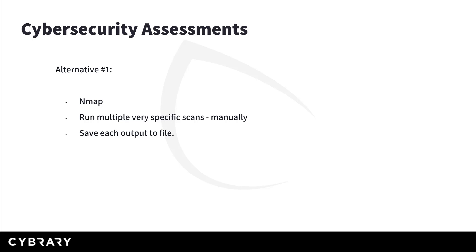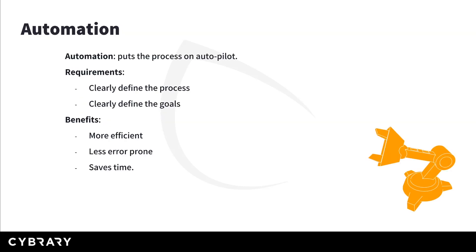So how else could you tackle this problem in a more efficient way? This is where automation makes really good sense. Automation means having the entire process, or at least a very large part of it, put on autopilot. You'd have to define a clear objective of the automation process so you know exactly when and to what scenario it can be applied. Automation allows you to take your hands off the process itself, making it more efficient, less prone to error if designed appropriately, and less time-consuming — allowing you to focus on aspects that need hands-on attention.